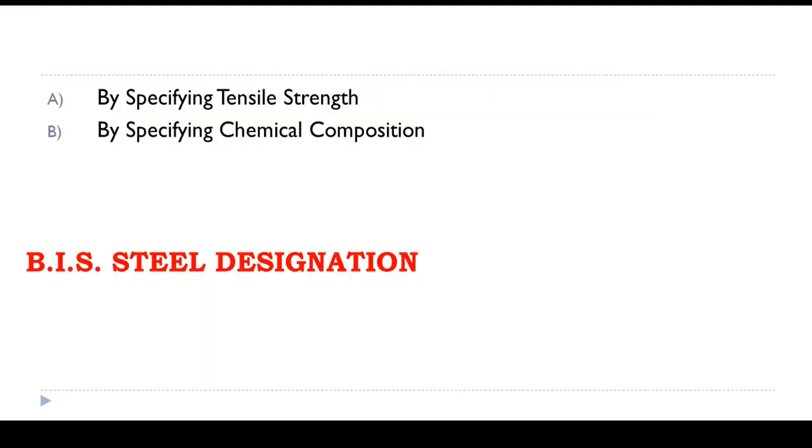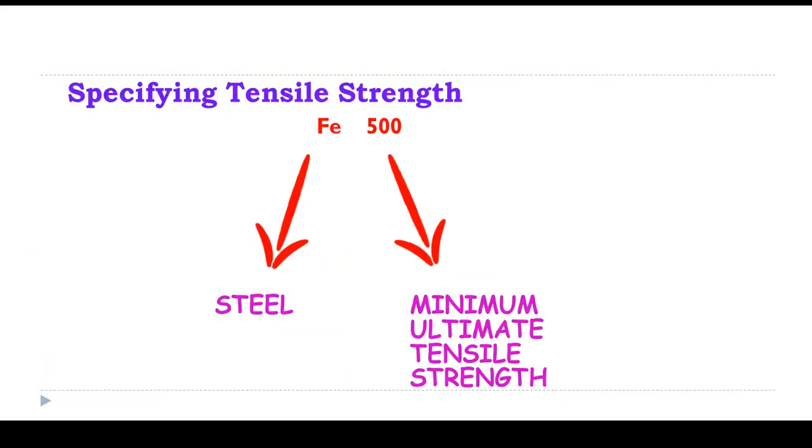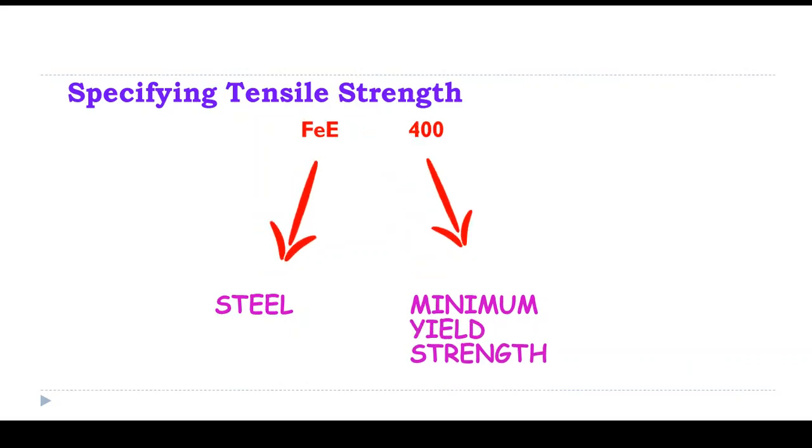Steel is designated by specifying tensile strength or by specifying chemical composition. Let us see both of them. By specifying tensile strength, FE500 means FE indicates steel and 500 means minimum ultimate tensile strength. FE400 means steel with minimum yield strength 400 N/mm².